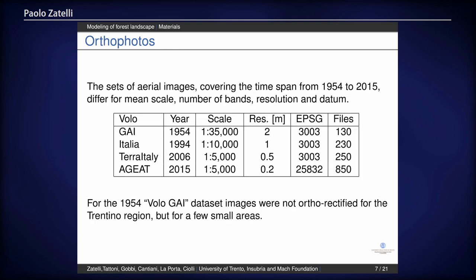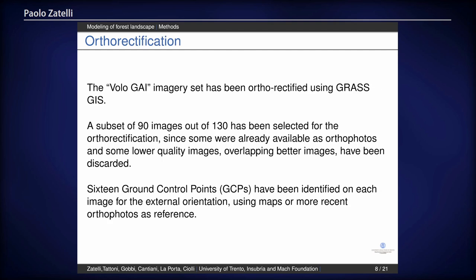These are the features of the orthophotos. As you can see, they are more uniform with respect to the historical maps. The main differences are that the first two sets are in black and white, so more difficult to use, and the first set is available only as images, not as ortho images, so we also need to rectify them. The first step is therefore to rectify the 1954 image dataset. The number of images covering the entire region is 130, but we pre-selected 19 images because there is a lot of overlapping, and we chose the best ones since some are blurred.